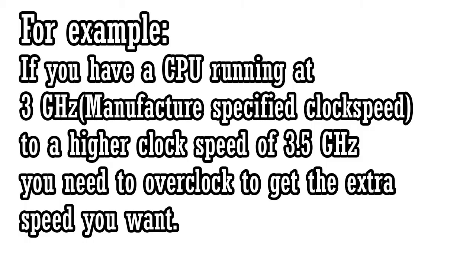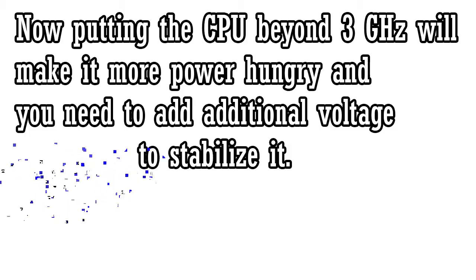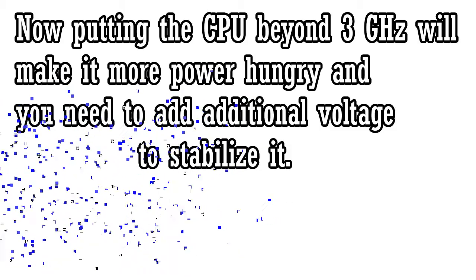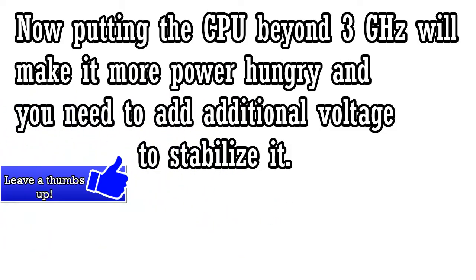For example, if you have a processor running at 3 GHz and you want it to run faster at a higher clock speed, say 3.5 GHz or more, then you need to overclock, meaning you put the processor beyond its limit of 3 GHz. Turning up the clock speed will make the hardware unstable, so you will have to add more voltage to have a stable overclock.